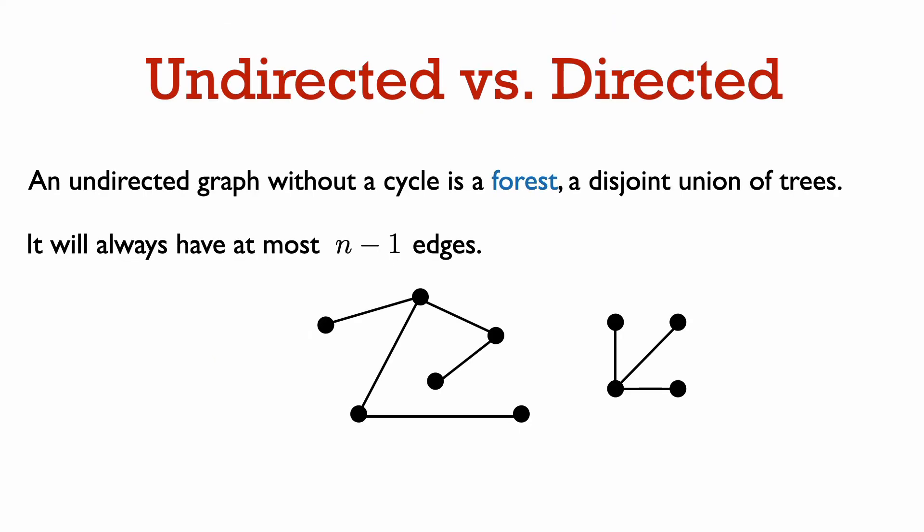Remember that graphs without a cycle also play an important role in undirected graphs. A tree is exactly a connected graph with no cycle. In general, an undirected graph without a cycle is going to be a disjoint union of trees, which is also called a forest.